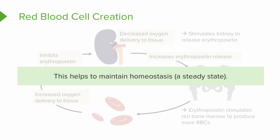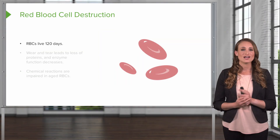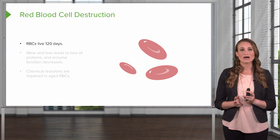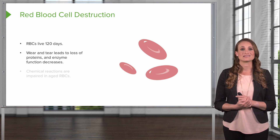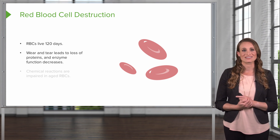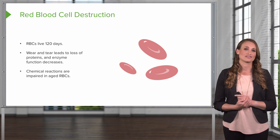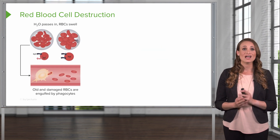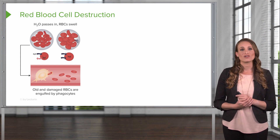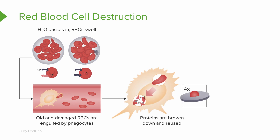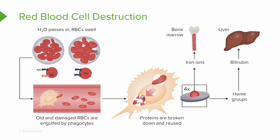This helps maintain homeostasis, which is the steady state. Red blood cells are also destroyed — they live about 120 days. The wear and tear leads to the loss of proteins and enzymes, and their function decreases. As they age, their chemical reactions are impaired. Water passes in and they swell and become sluggish, and eventually they'll be engulfed by phagocytes. The proteins are broken down and reused, and the iron goes back to the bone marrow for reuse. Bilirubin is released and transported to the liver for processing and removal from the body.